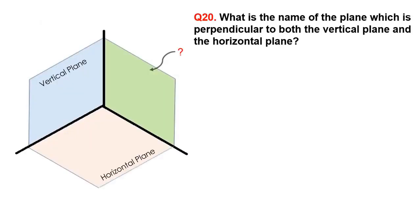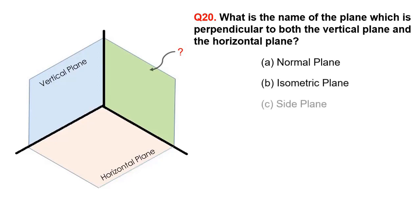What is the name of the plane which is perpendicular to both the vertical plane and the horizontal plane? A. Normal plane, B. Isometric plane, C. Side plane, D. Profile plane.